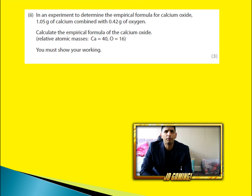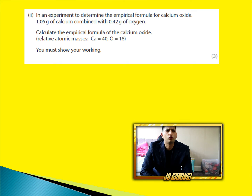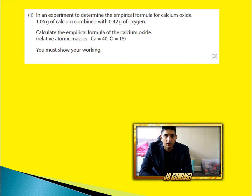In an experiment to determine the empirical formula for calcium oxide, 1.05 g of calcium combined with 0.42 g of oxygen. It says calculate the empirical formula of calcium oxide. I'm going to show you how I would work it out step by step. Pause the video and see if you can do it first.